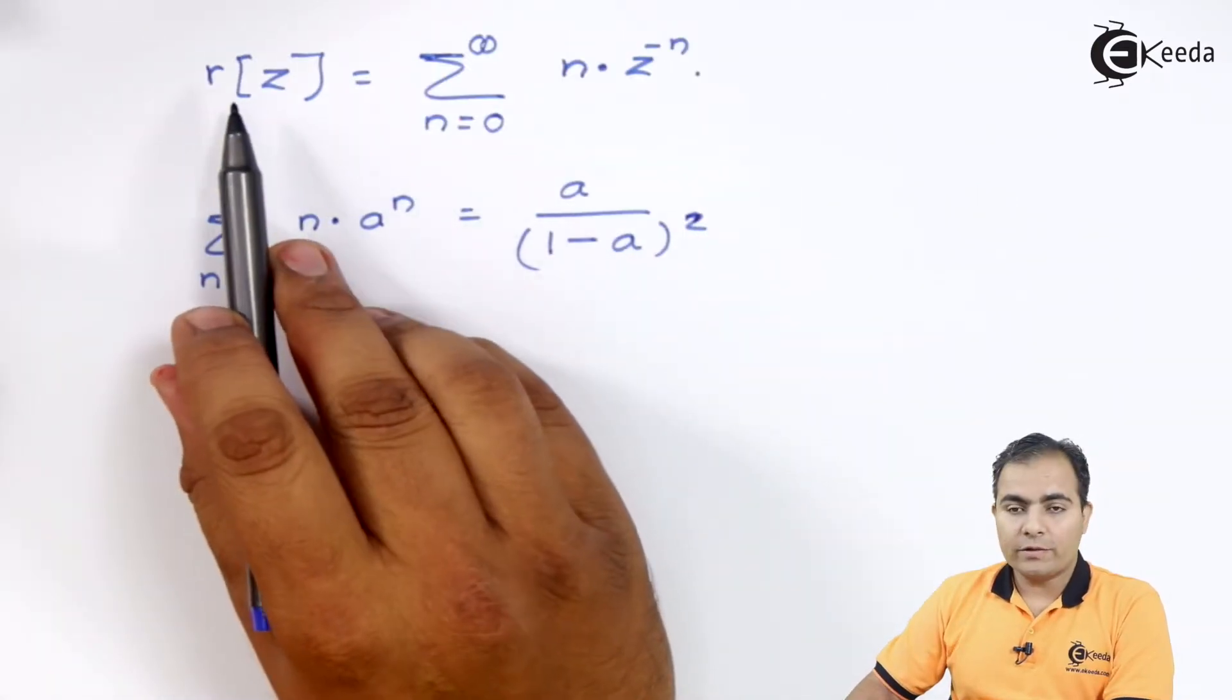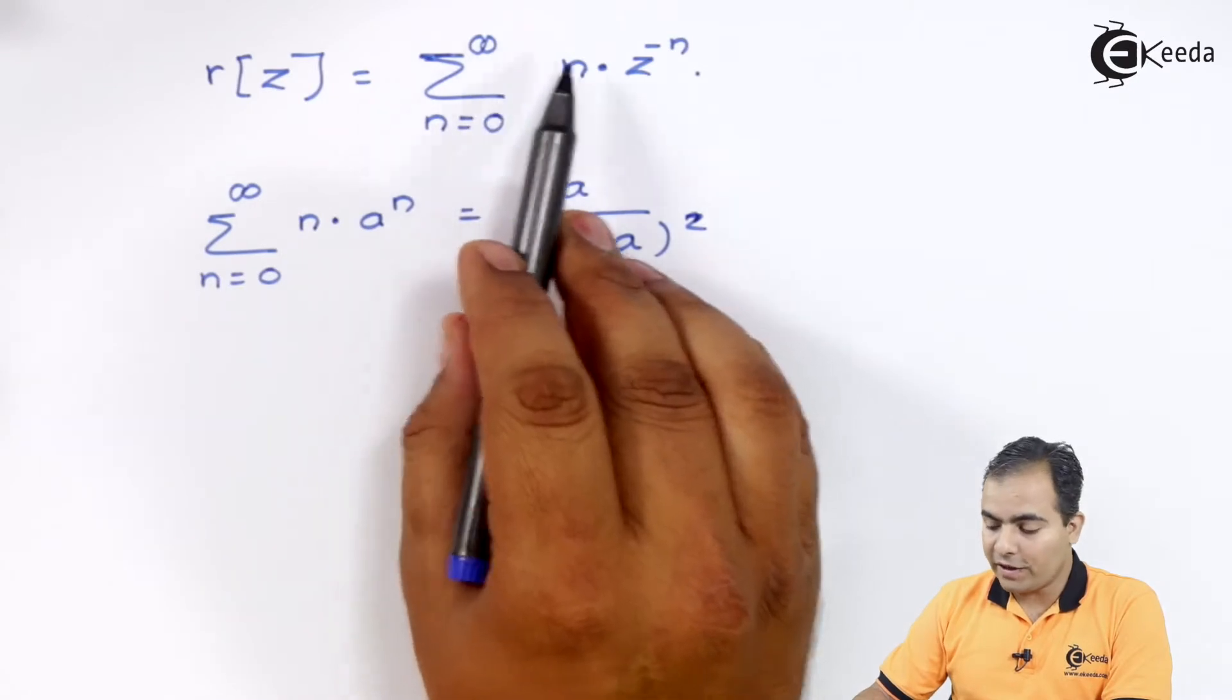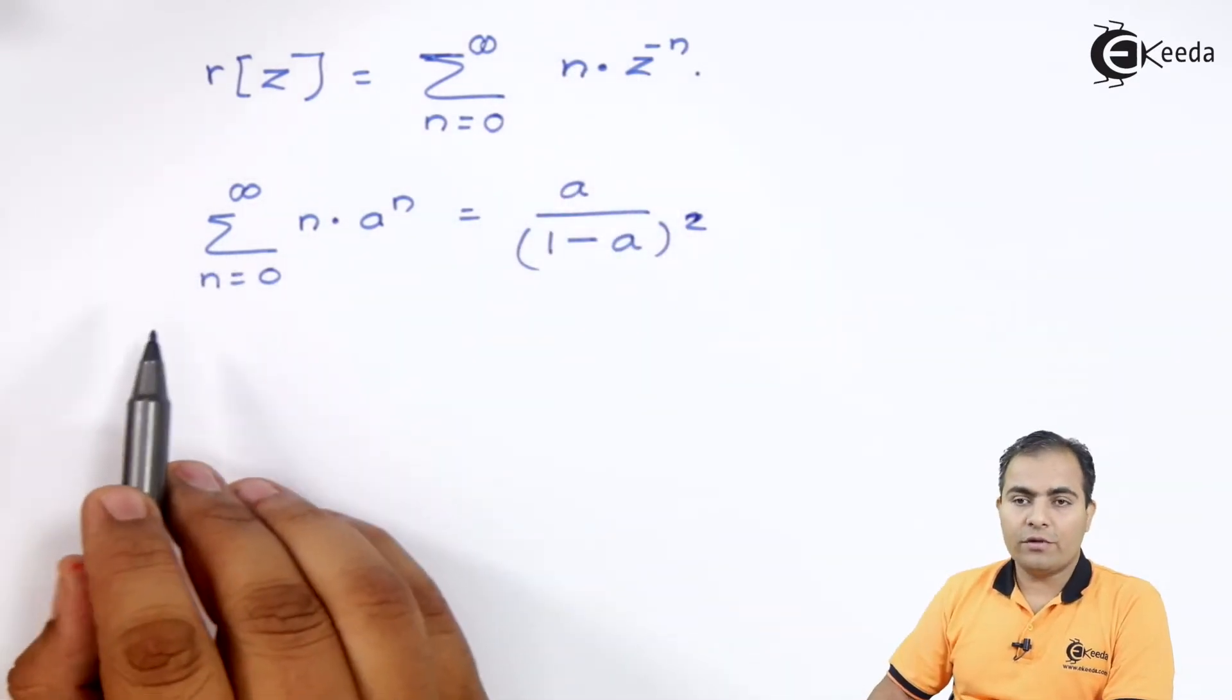Now, our result was R of z is nothing but summation n value varies from 0 to infinity n into z to the power minus n. Now, we have one formula.